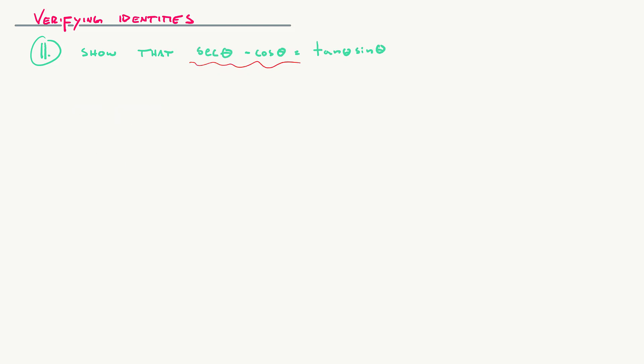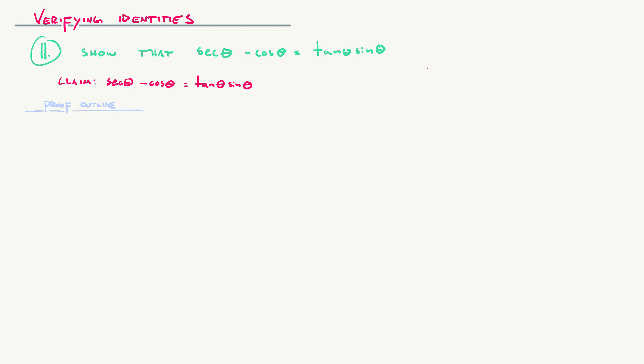Example two: let's show that the difference of two trig functions, sec θ − cos θ, is equal to tan θ · sin θ. Again we pick a side — I picked the left side, sec θ − cos θ. A typical strategy for me is to get everything in terms of sine and cosine, since we know all other trig function definitions in terms of sine and cosine, and that often helps.